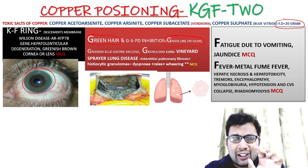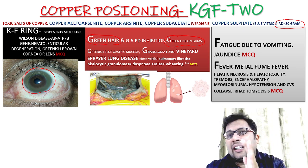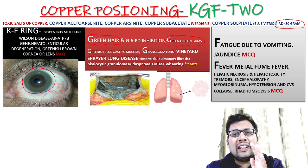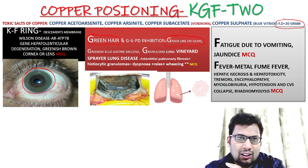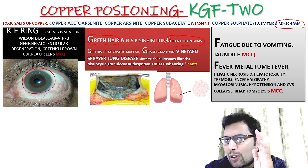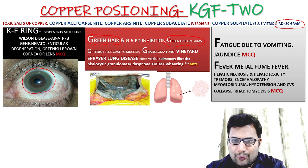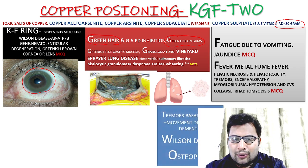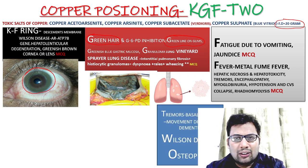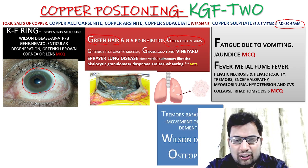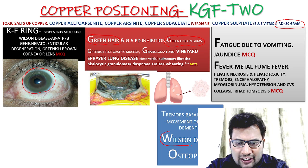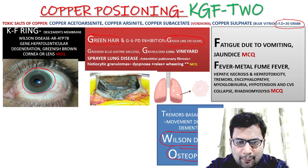T stands for tremor — one common finding is tremor, because of accumulation of copper in the basal ganglia. T for tremor. W stands for Wilson disease, and O stands for osteopenia.